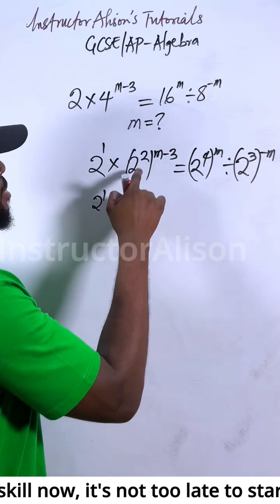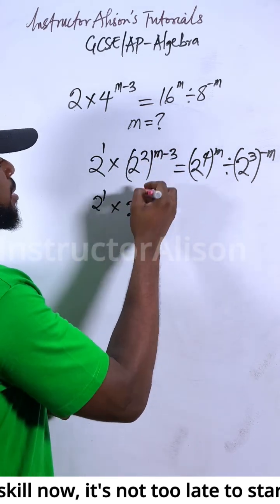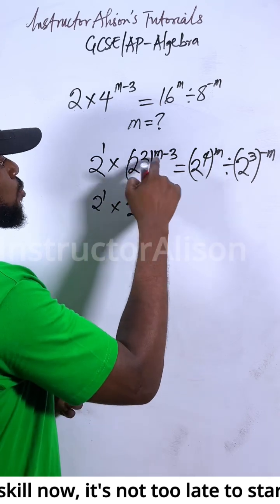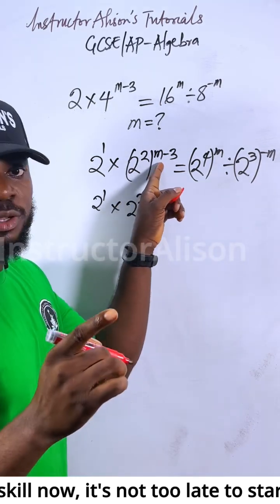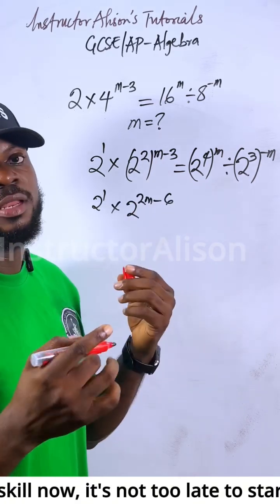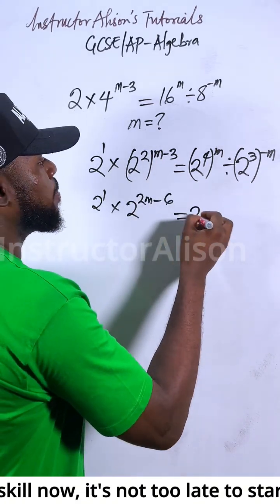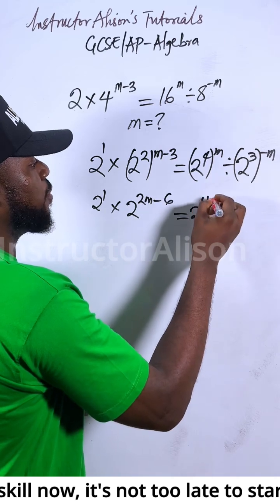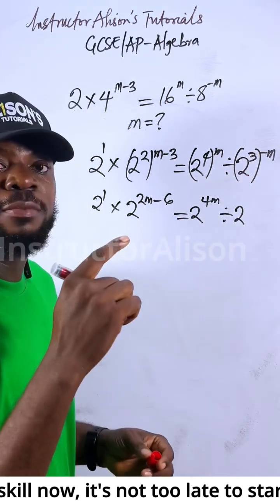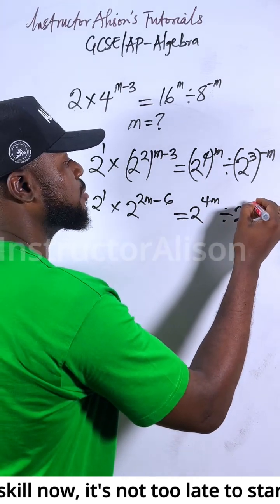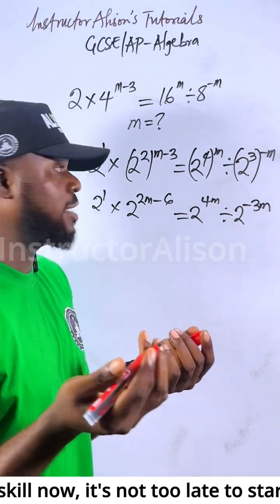Let's clear the bracket and expand. We introduce: two times m, now two times three gives us six. Some students multiply this one and forget to multiply by this one — don't make that mistake. So two to the power of four times m gives us 4m, divided by two to the power of three times negative m, which gives us negative 3m. Don't forget that negative sign.